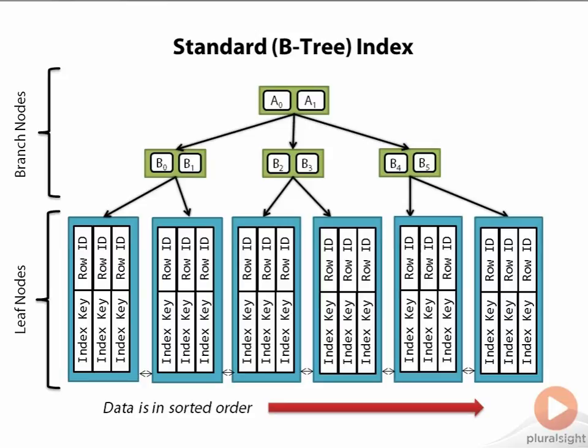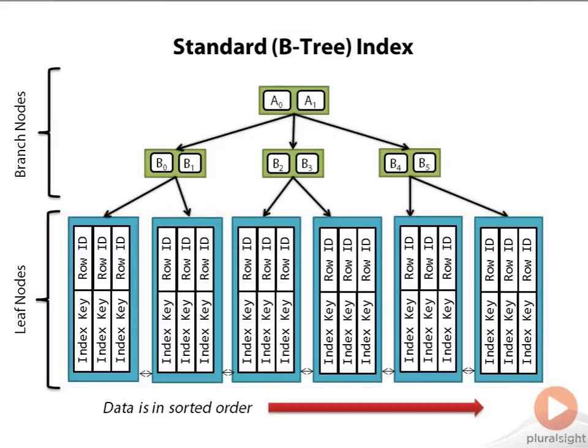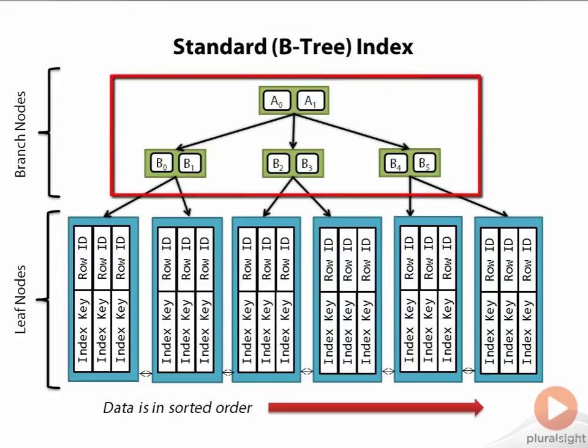A B-tree index consists of a tree structure that looks similar to what you see on the screen. The first thing to understand is that in these nodes down here at the bottom of the screen, the leaf nodes, the data in the index is stored in sorted order. Why this is important is that now we can build a tree structure on top of this sorted data, and that is what is represented by the green blocks up here, the branch nodes.